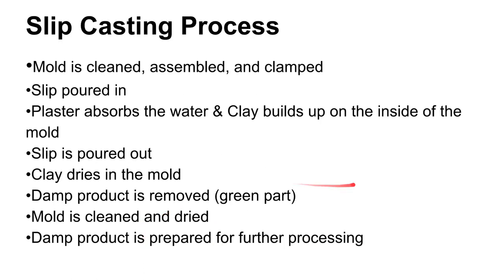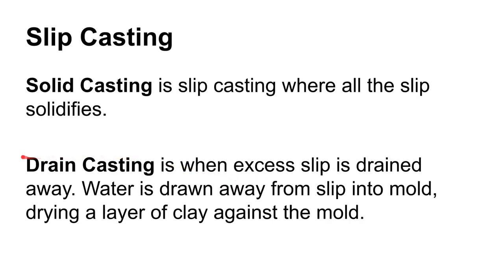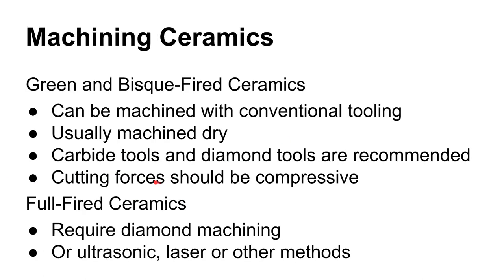There are two versions of slip casting: drain casting, where excess slip is poured out once a solid liner forms, and solid casting, where the entire cavity remains full of slip as it dries without draining the excess — used for thinner pieces.